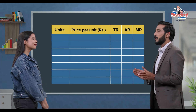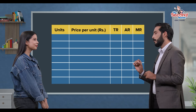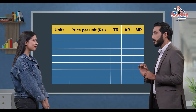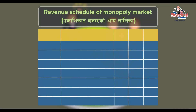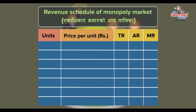Now let's make a schedule and calculate the monopoly firm's total, average, and marginal revenue. For the monopoly firm's revenue schedule, the columns are: goods and services quantity sold, price, total revenue, average revenue, and marginal revenue — first, second, third, fourth, and fifth columns. For the monopoly market, as a price maker, when goods and services sales increase, price is lower.